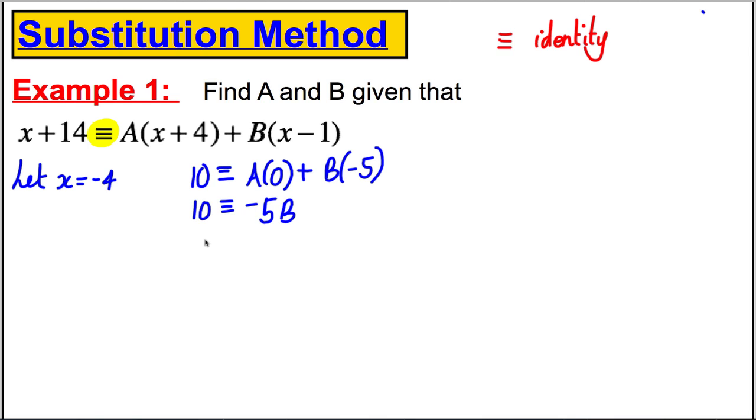And therefore, B, we can determine, must be -2. 10 divided by -5. And we found B.